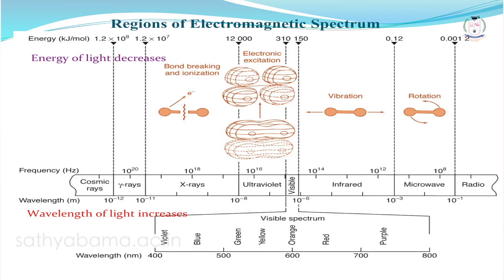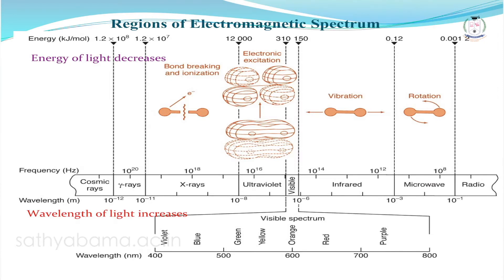The electromagnetic radiation spectrum consists of several radiations ranging from gamma rays to radio waves. The energy of radiation decreases from 10⁷ kilojoules per mole to 10⁻³ kilojoules per mole, while the wavelength increases from 10⁻¹² to 10⁻¹ meter. This confirms that energy is inversely proportional to wavelength.